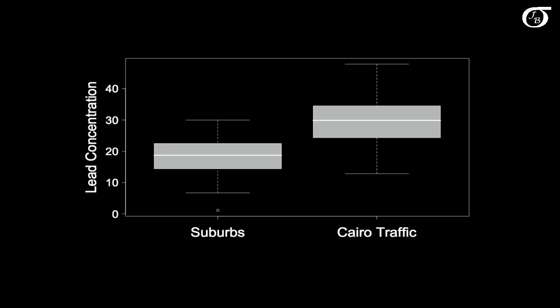Here are the box plots for an example I've looked at previously involving lead concentration in the blood of Egyptian police officers.